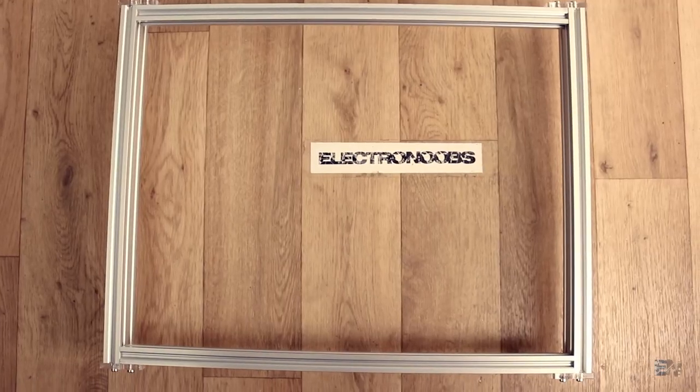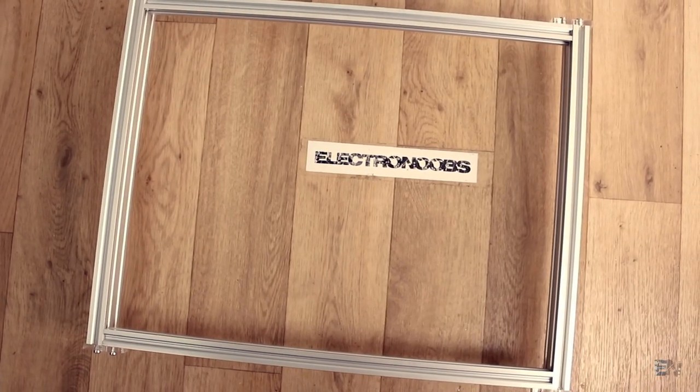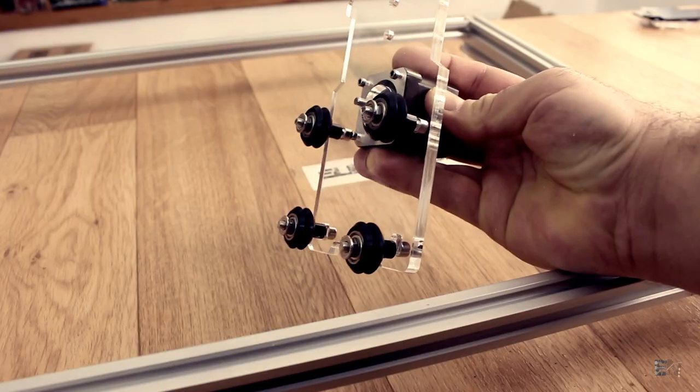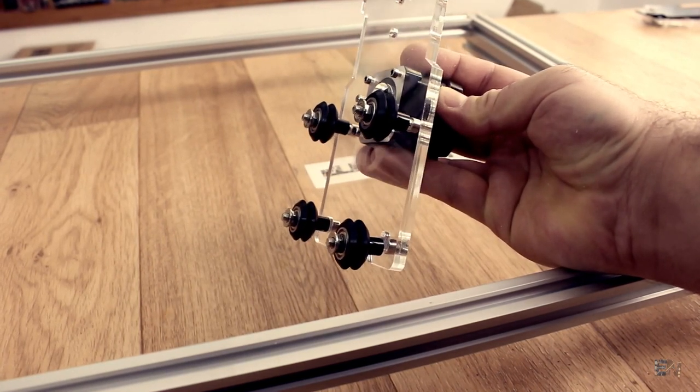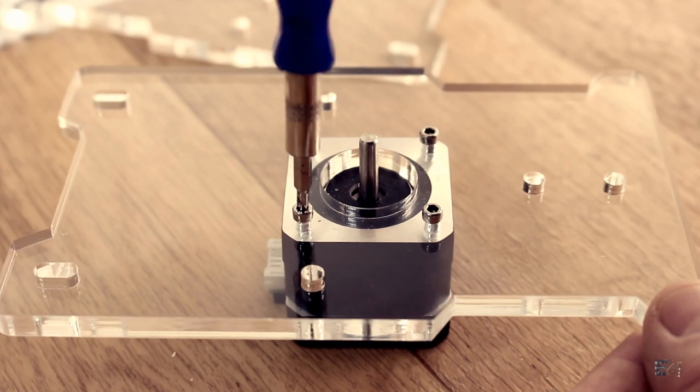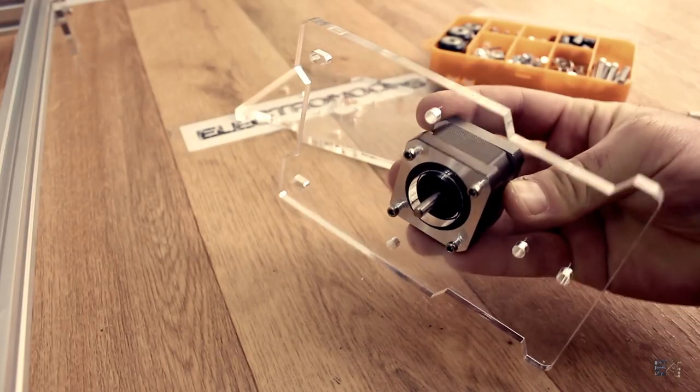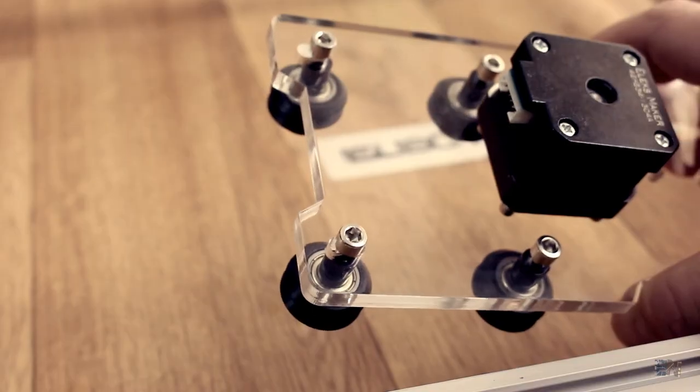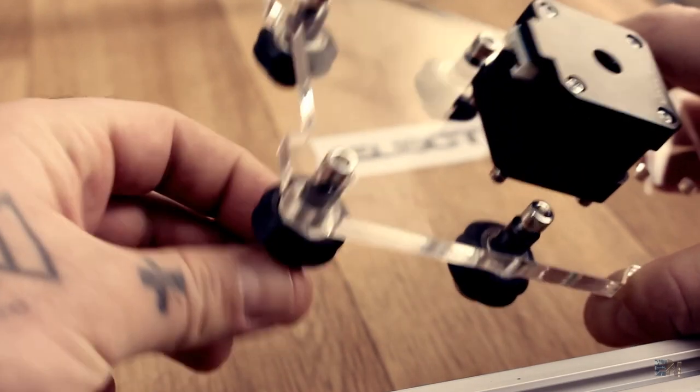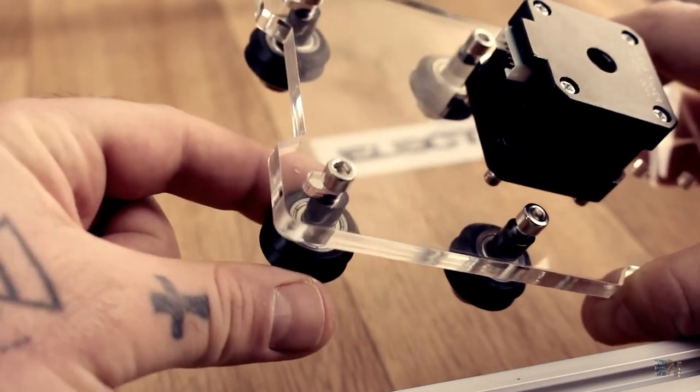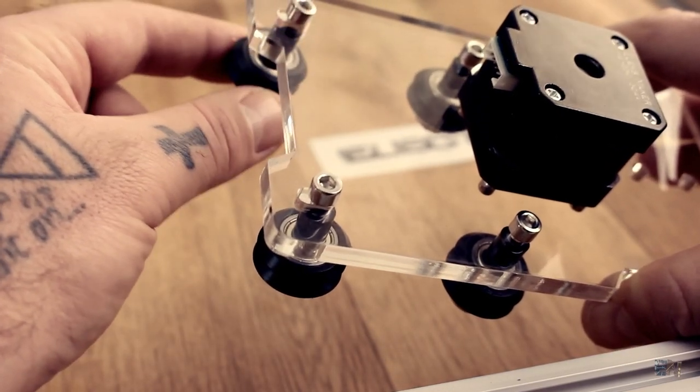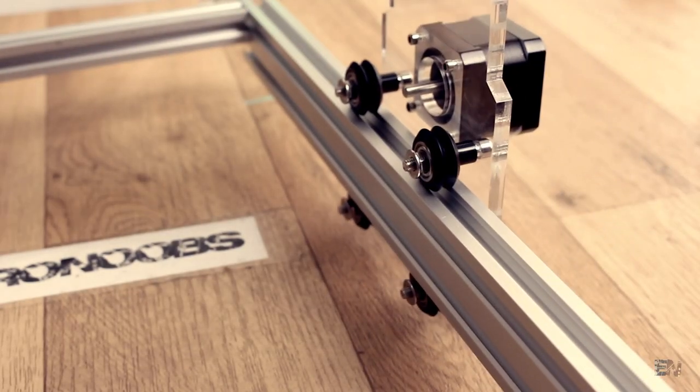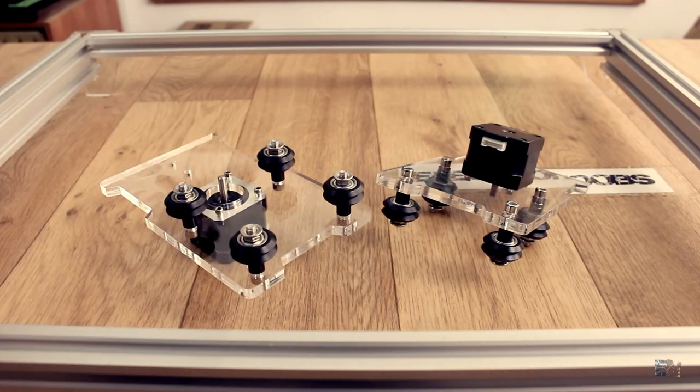Once the main frame is ready, we prepare the Y-axis support with the wheels and the stepper motors. We first add the stepper motor in place using M3 screws. When that is done we add the four rollers using M5 screws and nuts. Leave the bottom roller loose so we could later fit the entire support on the metal bar. Do the same for the other side.